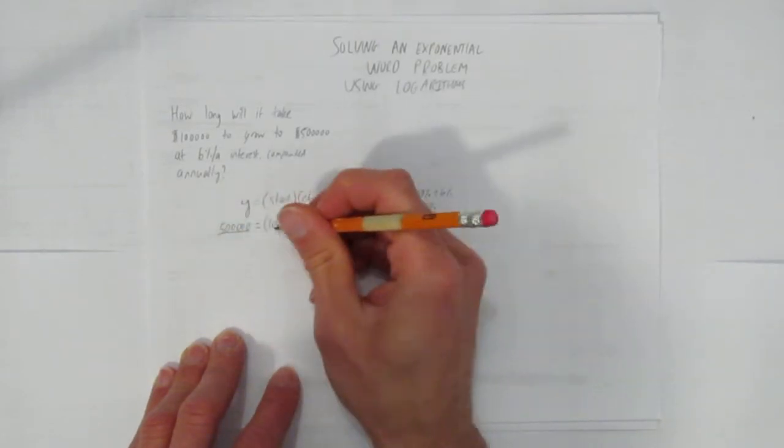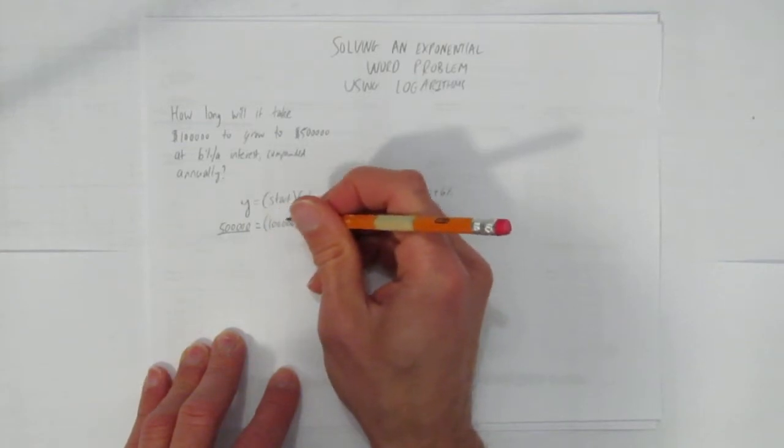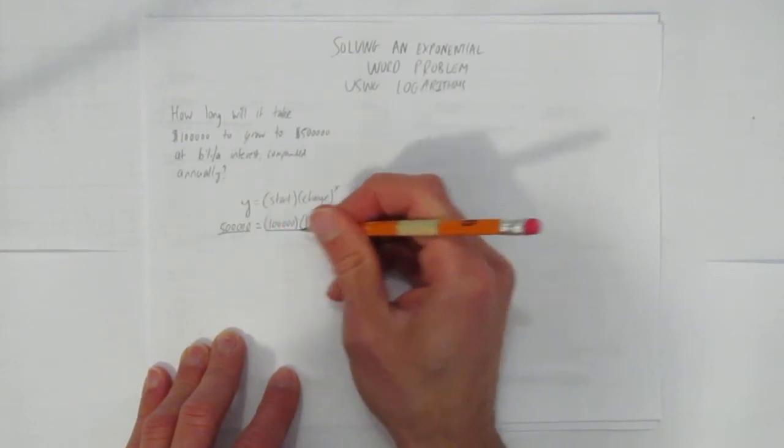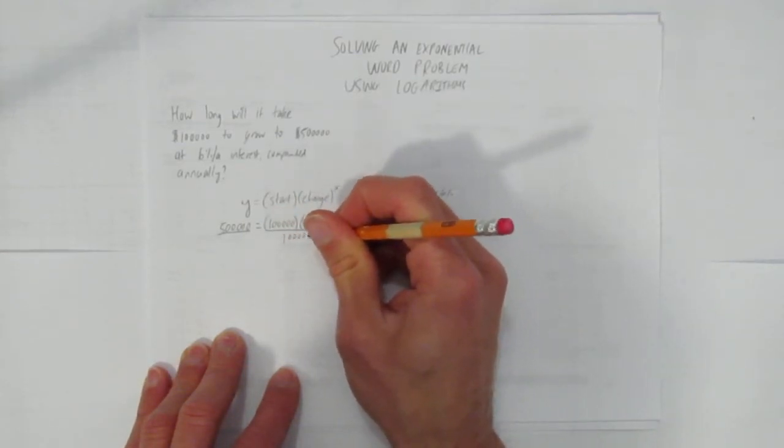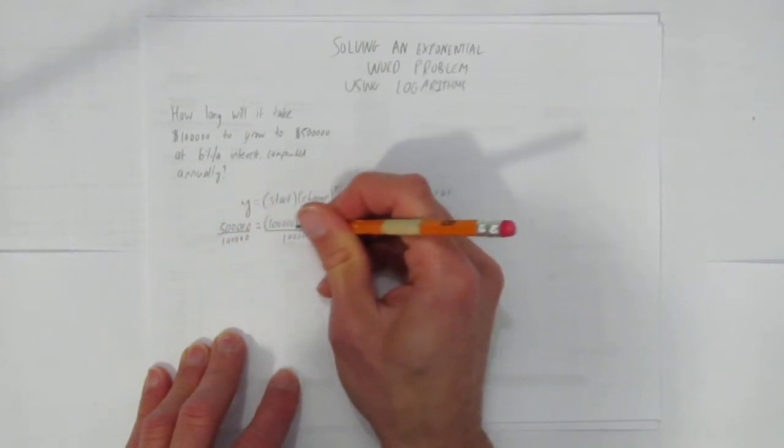Now I've got to get rid of this number. I can't solve for x yet, and I can't use logarithms yet until I get rid of this $100,000 on both sides, so I'm going to divide both sides by $100,000. Why divide? Because it's timesing.